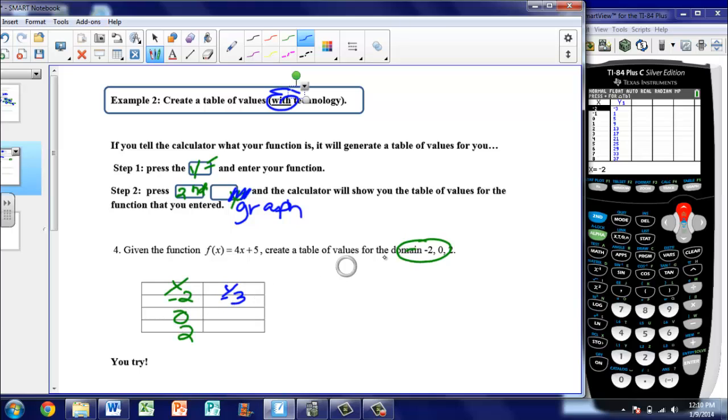Now I want to know when x is 0. So I go back to my calculator and see, okay, when x is 0, y is 5. So I can just go ahead and write that in. And then finally, I want to know when x is 2. So I go back to my calculator. When x is 2, y is 13. So I can then put that into my table.